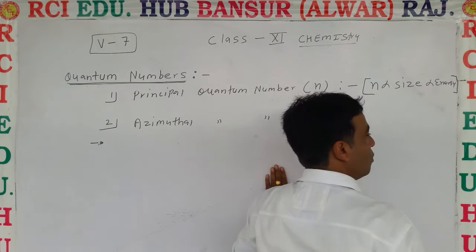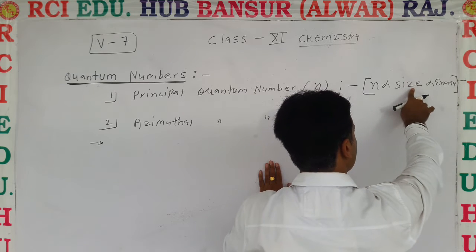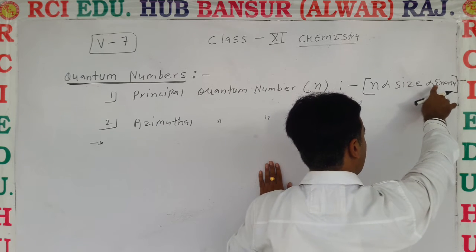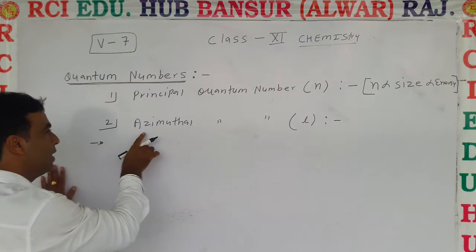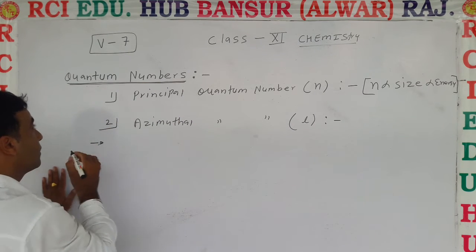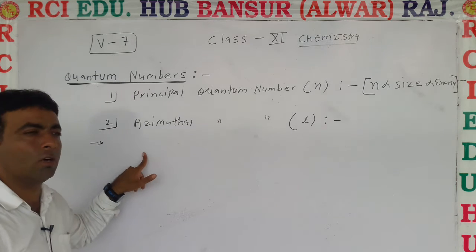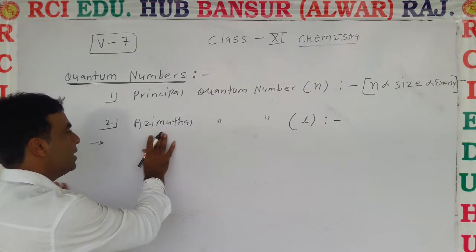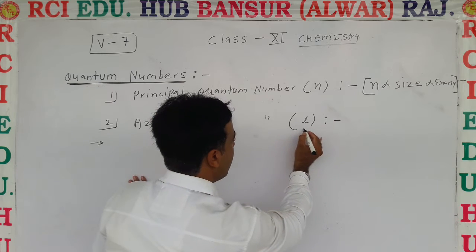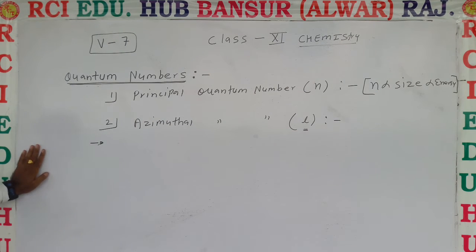To recap: n is directly proportional to size and directly proportional to energy. Now we study the second quantum number — the azimuthal quantum number, also called the orbital angular quantum number — represented by small l.